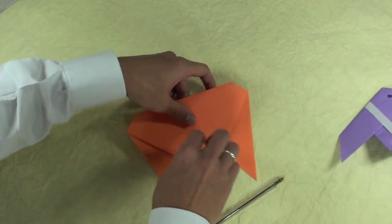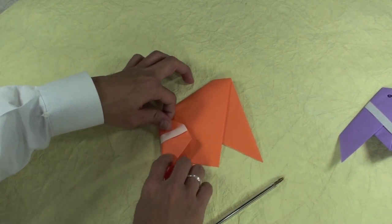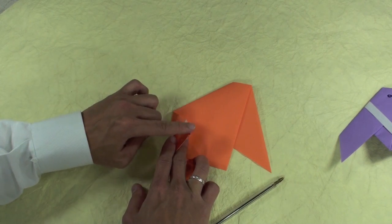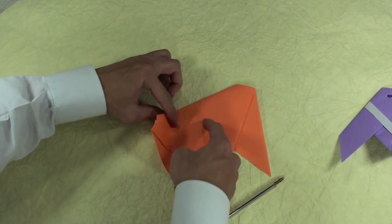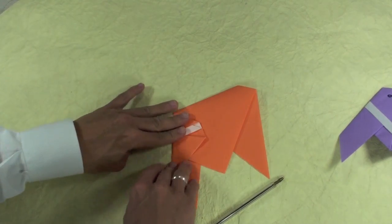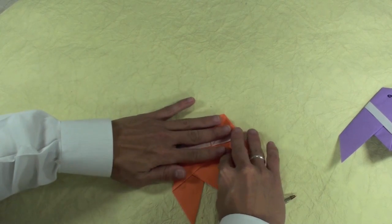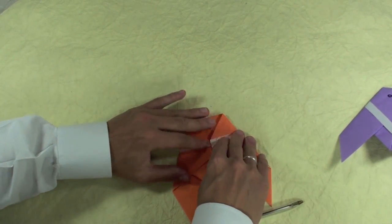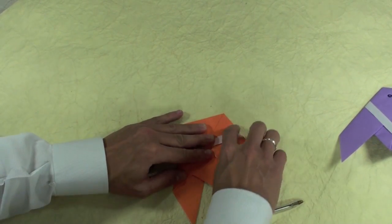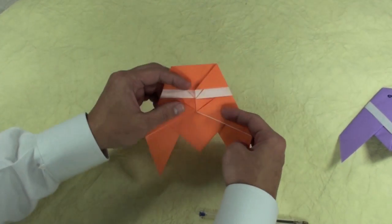Now turn the model over and fold here, making the edge of the paper, this edge here, go up to the middle line. And then like this. And the same thing here on the other side. Like this. Okay.